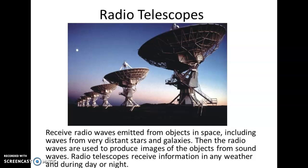The next type are radio telescopes. You've probably seen the big radio disks like this before. Radio telescopes use radio waves emitted from objects in space, including waves from very distant stars and galaxies, and those radio waves are used to produce images of objects. Importantly, radio telescopes can receive information in any weather, during day or night.